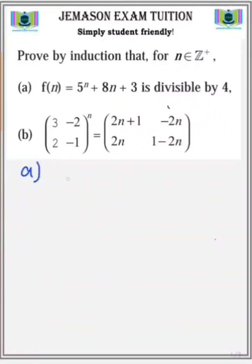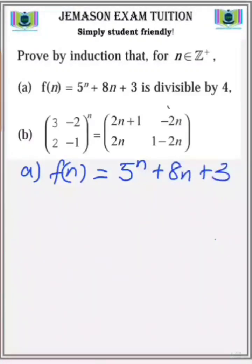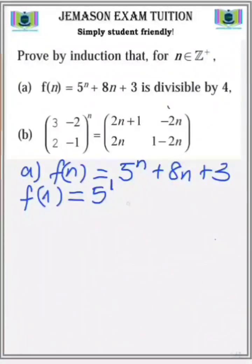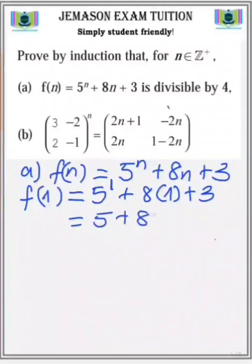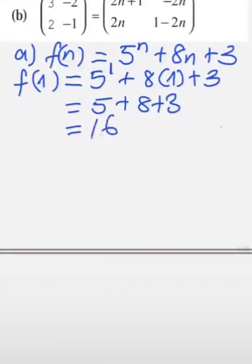We go straight to part (a), which is asking us to prove that f of n equals 5 to the n plus 8n plus 3 is divisible by 4 for all n belonging to the set of positive integers. We start with the base case: f of 1. We substitute 1 into the relation: 5 to the 1 plus 8 into 1 plus 3 gives 5 plus 8 plus 3, which gives 16, and 16 is divisible by 4. So the base case when n equals 1 is true.